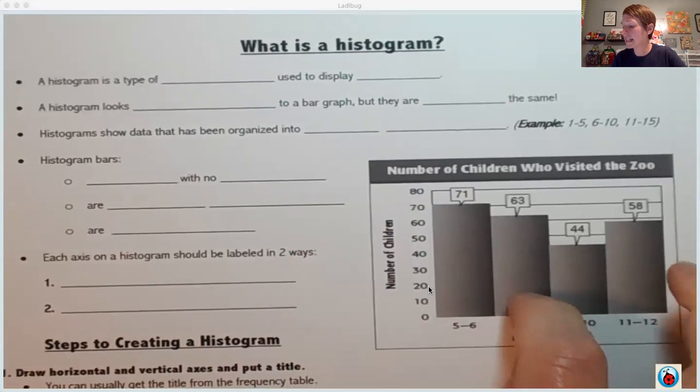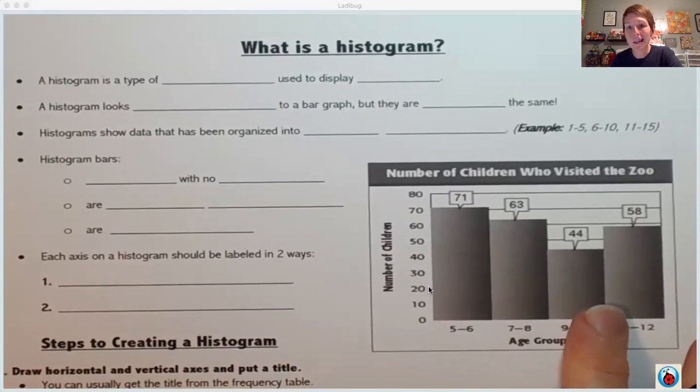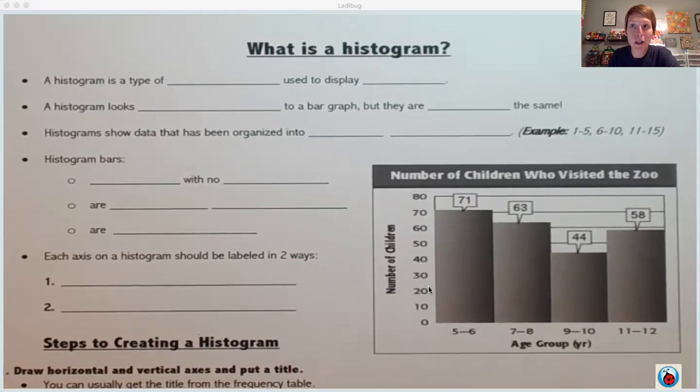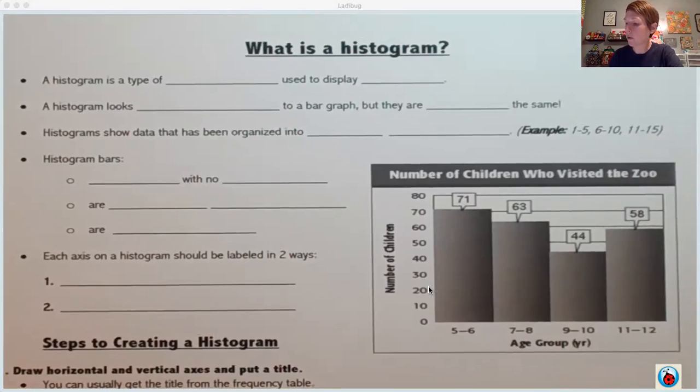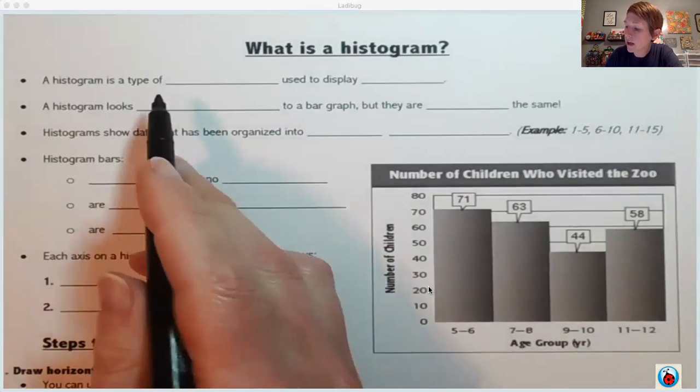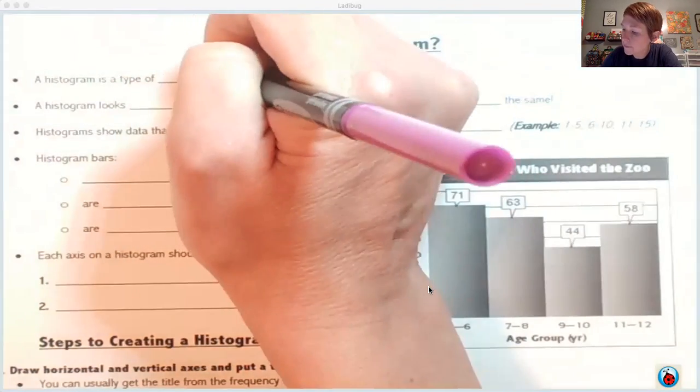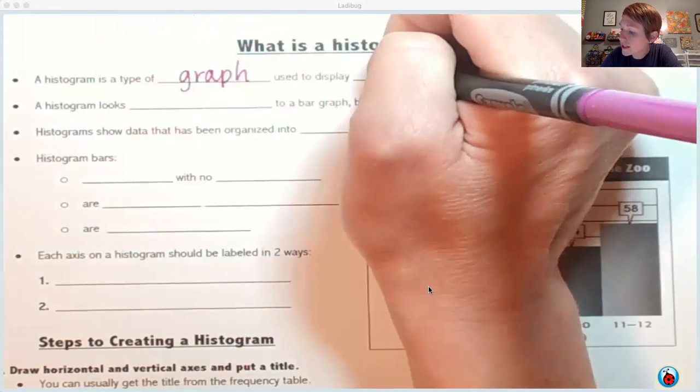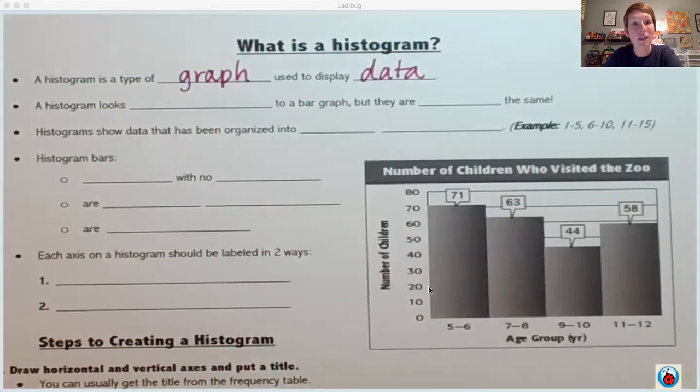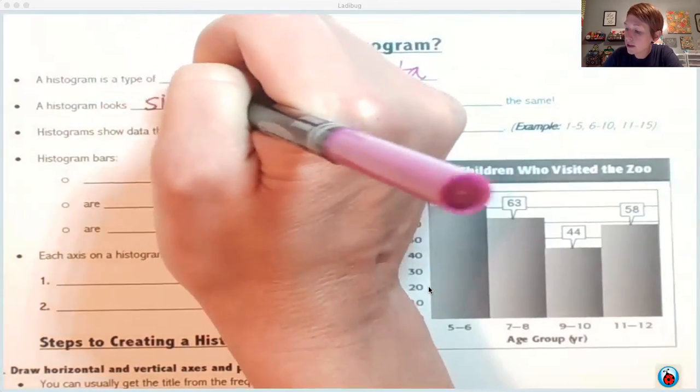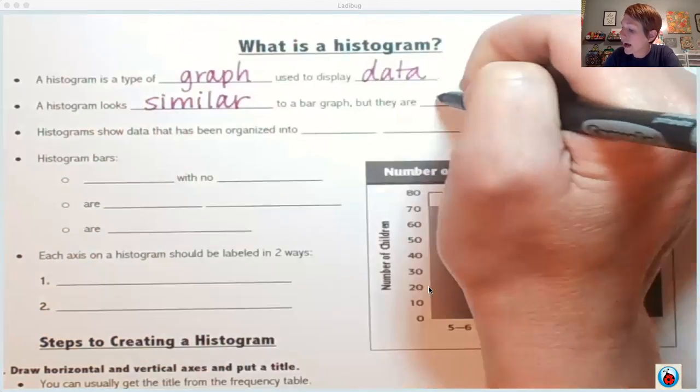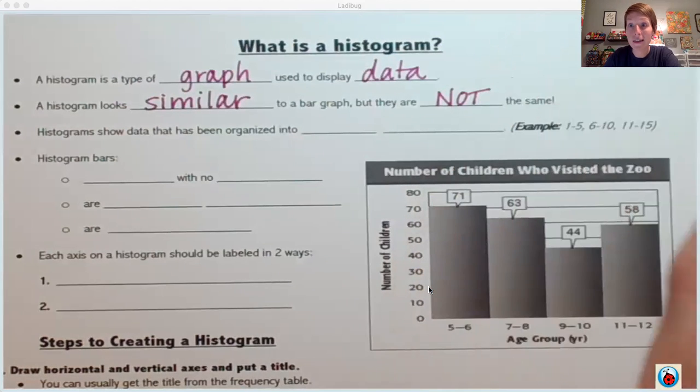This right here is a histogram. It looks a bit like a bar graph. We're going to talk about some of the differences between a histogram and a bar graph. A histogram is a type of graph used to display data. We're still talking about lists of data. As I said, a histogram looks similar to a bar graph but they are not the same. Let's talk about some differences.